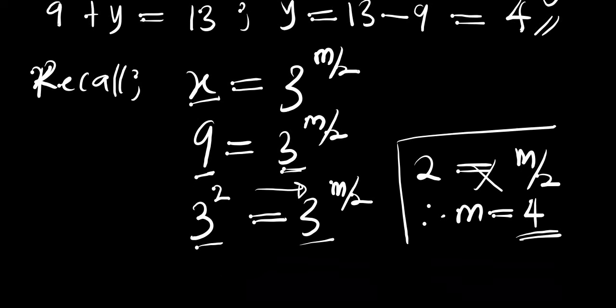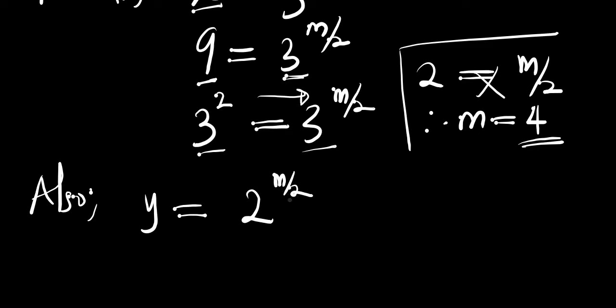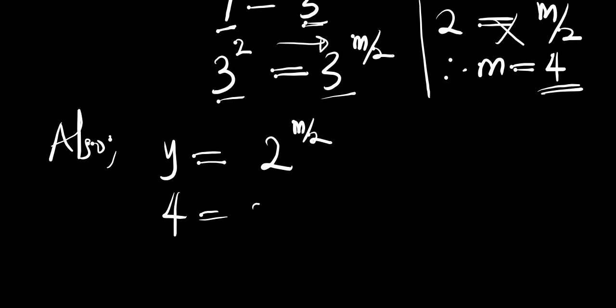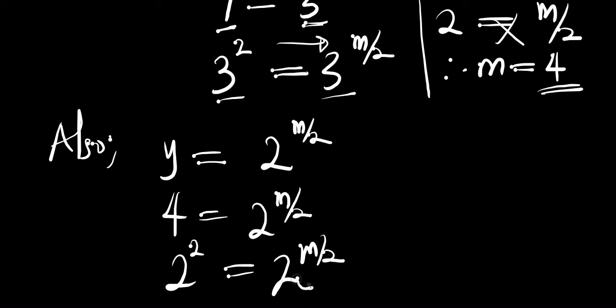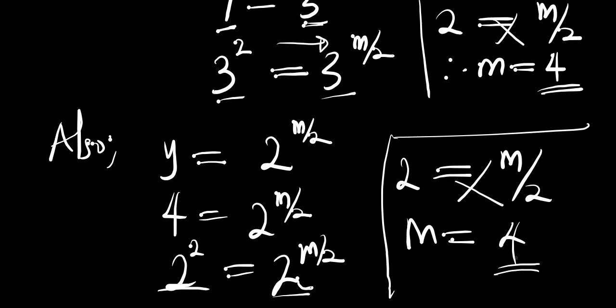We can also find m using y. Recall that y equals 2 to the power of m over 2, and y equals 4. So 4 equals 2 to the power of m over 2, which we write as 2 to the power of 2 equals 2 to the power of m over 2. The bases are the same, so comparing exponents gives 2 equals m over 2, and cross-multiplying gives m equals 4. In either case, m equals 4.